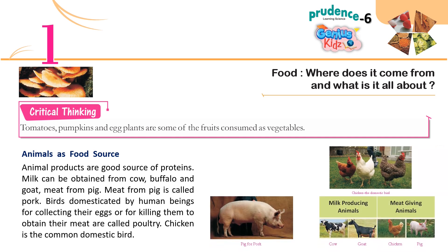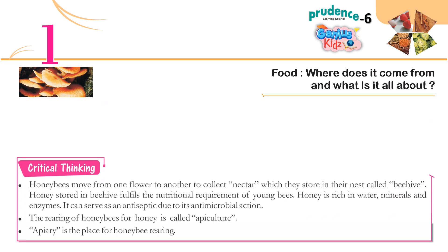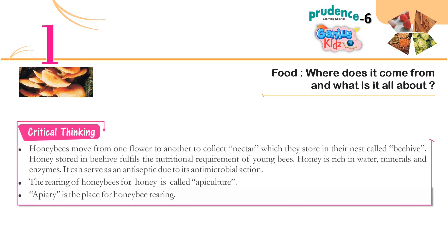Animals as food source: Animal products are a good source of proteins. Milk can be obtained from cow, buffalo and goat. Meat from pig is called pork. Birds domesticated by human beings for collecting their eggs or for killing them to obtain their meat are called poultry. Chicken is a common domestic bird. Honeybees move from one flower to another to collect nectar, which they store in their nest called a beehive. Honey stored in the beehive fulfills the nutritional requirement of young bees. Honey is rich in water, minerals and enzymes, and can serve as an antiseptic due to its antimicrobial action. The rearing of honeybees for honey is called apiculture. An apiary is the place for honeybee rearing.